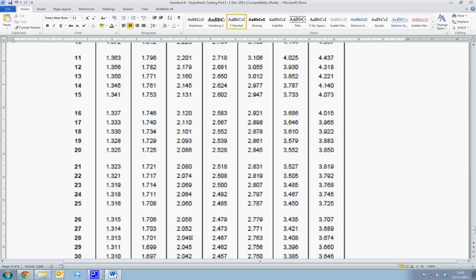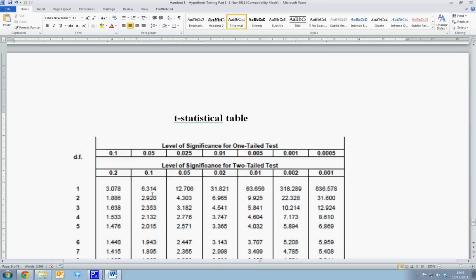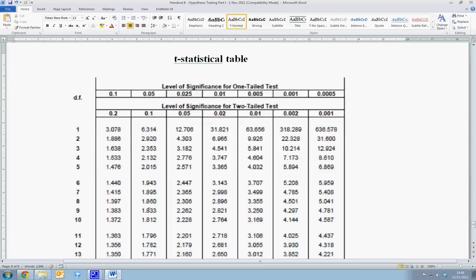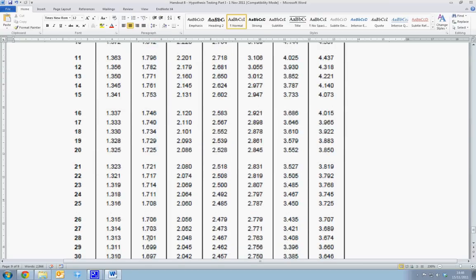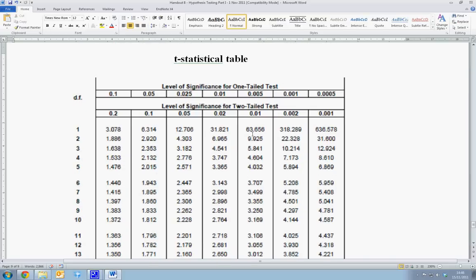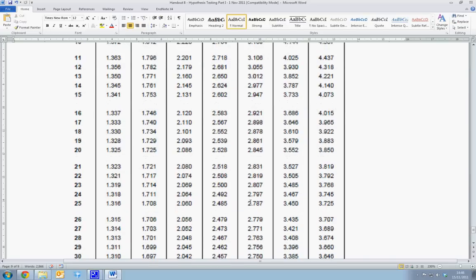We can also obtain the 90% critical value for 28 degrees of freedom, which gives us a value of 1.701. And we can obtain the 99% value using the 0.01. Go down to 28 degrees of freedom, and we have 2.763.